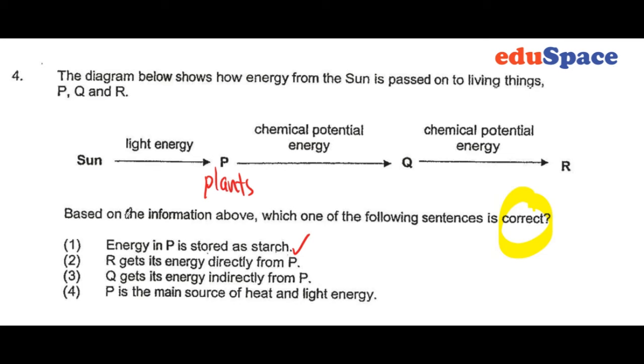R gets its energy directly from Q, not P. And Q gets its energy indirectly from P. No, indirectly is still from the sun.